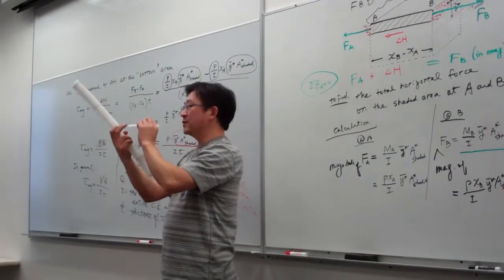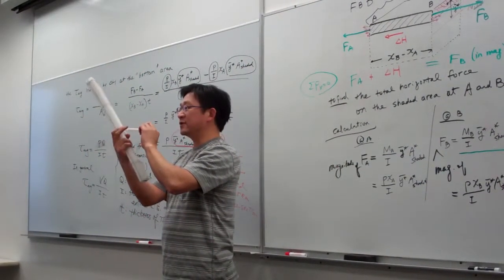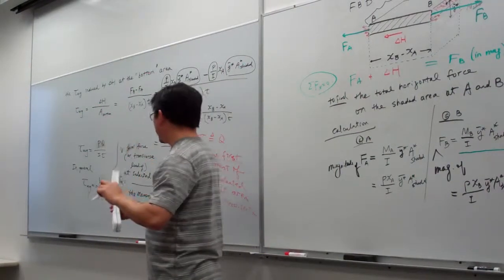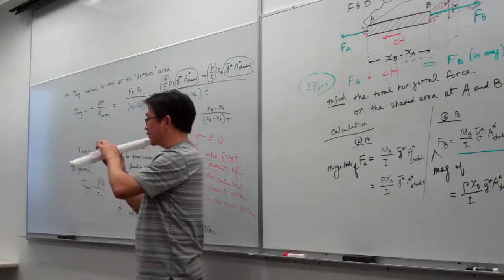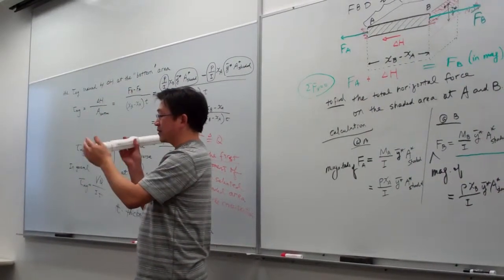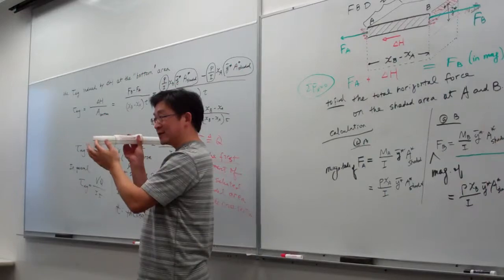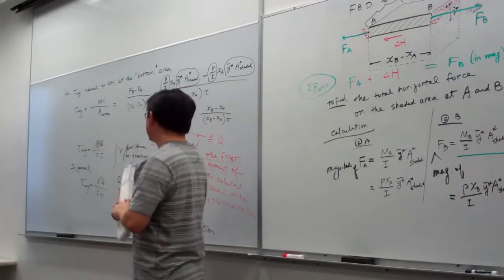And I is the width, the thickness from here to here, which is the width. And T, oh sorry, the T is the width, and I is the moment of inertia of the entire cross-section about the neutral axis. This is the magnitude.